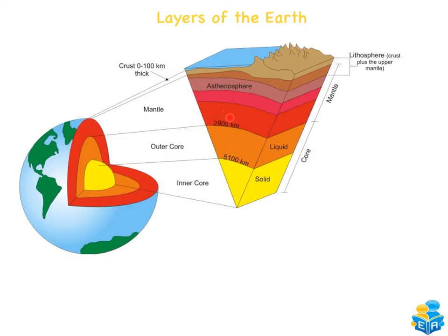Moving up into the mantle, it has a few different layers within it. The mantle surrounds the core and is the largest layer — about 80% of the earth's volume. The rocks in the mantle are in a molten or semi-molten state.